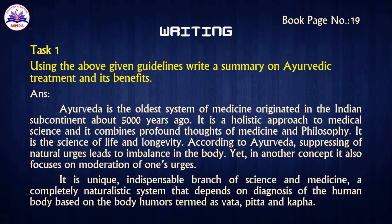Here is a short explanation of writing structure. A general topic writing should include: first, an introduction; next, a detailed discussion in paragraphs; and finally, a conclusion stating your key point. Book page number 19 — Task 1: Using the above given guidelines, write a summary on Ayurvedic treatment and its benefits.